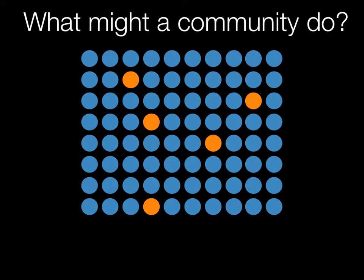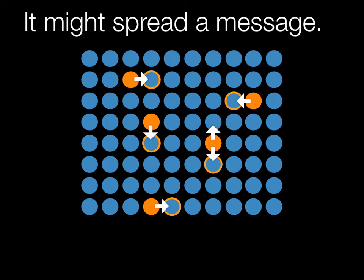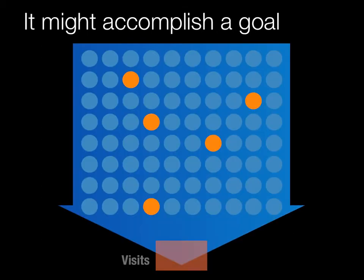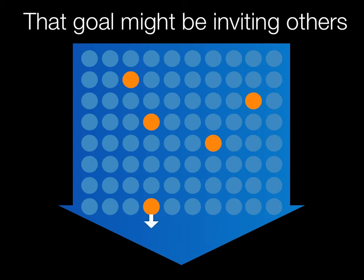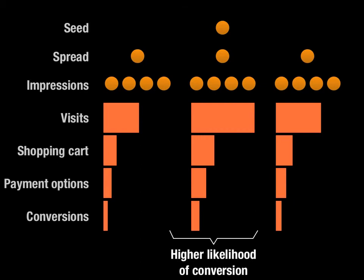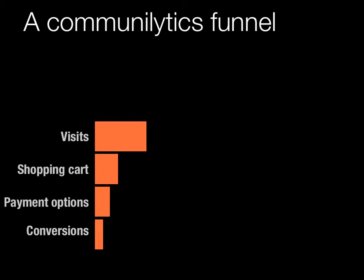Let's look at what a community might do. First, that community might simply tell other people about a message for you. If that message is particularly compelling, it might tell that message to many other people, and at that point it becomes viral. A viral message is simply something that when you hear it, you tell more than one person. Your community might do other things — you might ask it to visit a particular site, mobilize to do something, or even spread the message and grow the community by inviting others. Different communities and different social graphs are going to have different likelihood of an outcome — for example, a certain percentage chance of actually converting and doing something you want on the website, like buying something.